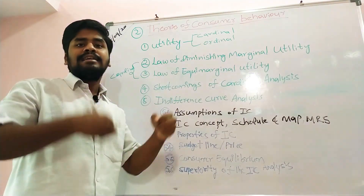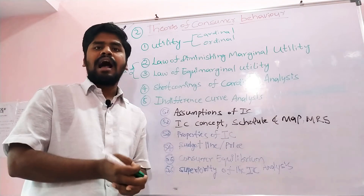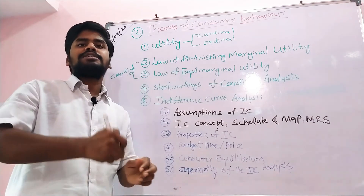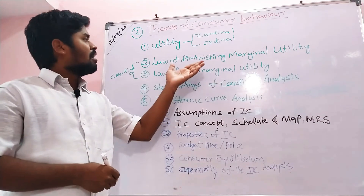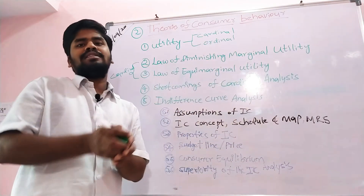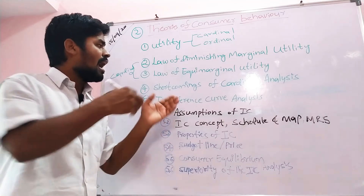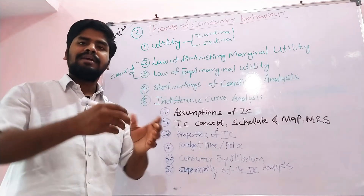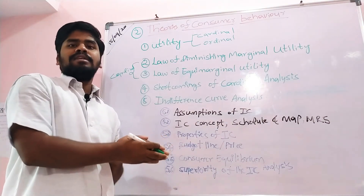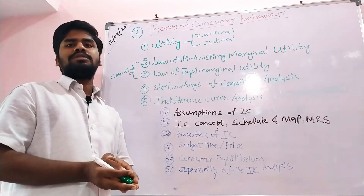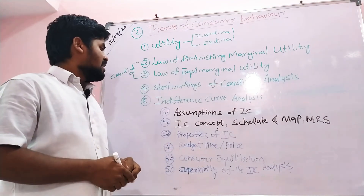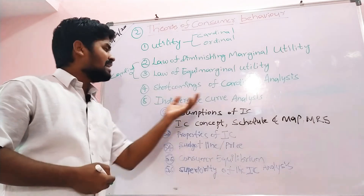Hicks and Allen developed ordinal analysis, which gives ranks — meaning it compares satisfaction with respect to two or more goods. Cardinal utility based on marginal utility considers only one good, whereas ordinal analysis considers more than one or two goods, allowing us to compare utility and give ranks from one unit to another.